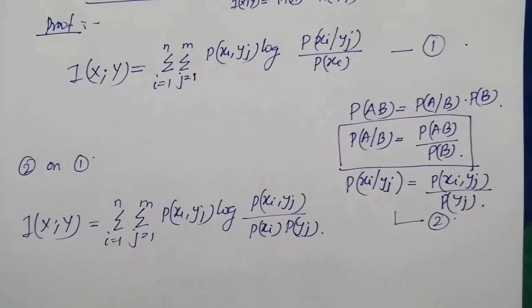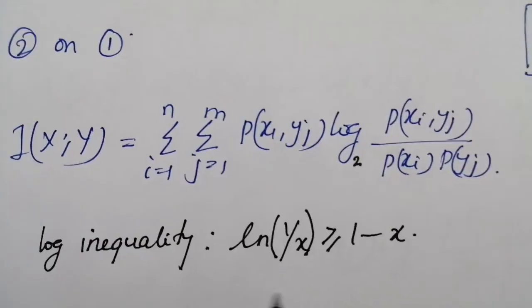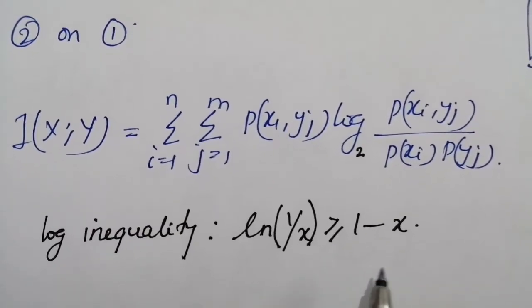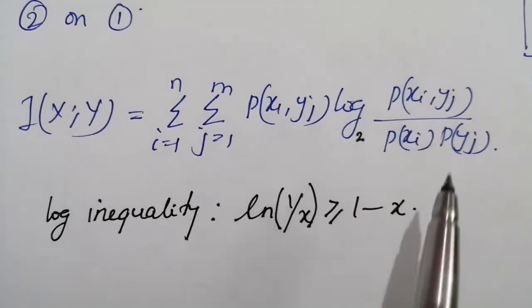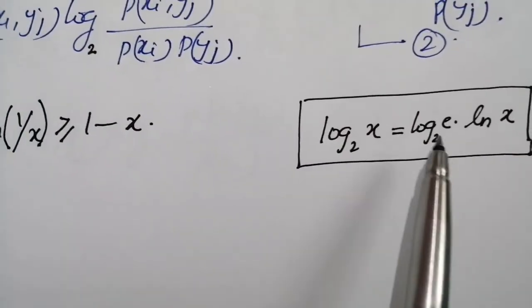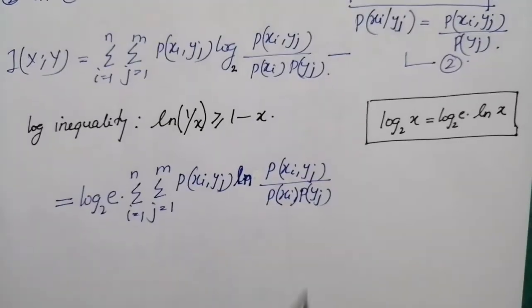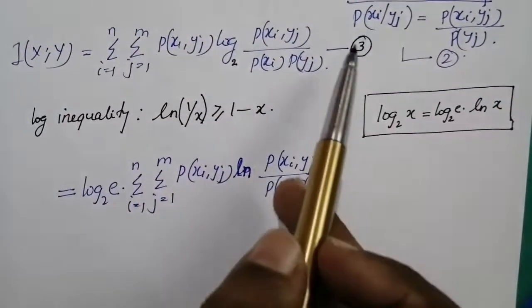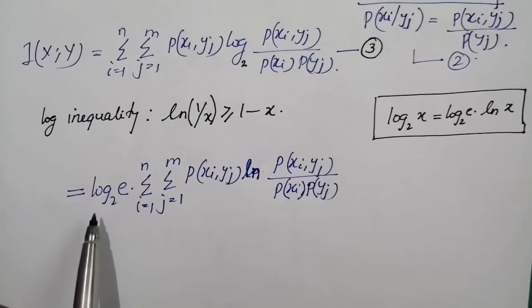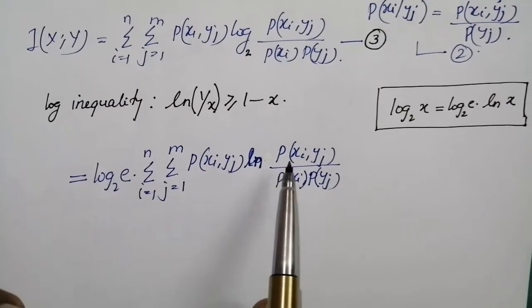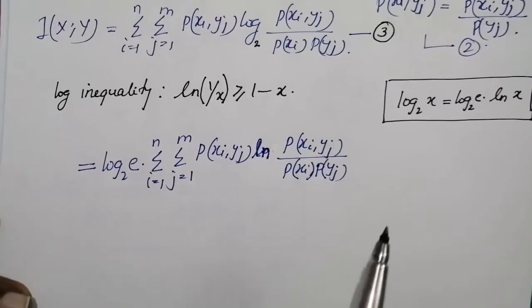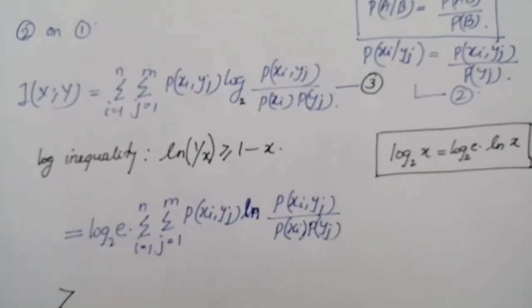Now we will apply the log inequality: ln(1/x) ≥ 1 - x. In order to apply the log inequality, we need to convert the logarithm base 2 to the ln function. For that, we know that log₂(x) = log₂(e)·ln(x). So equation number three can be written as log₂(e) times the double summation over i and j of p(xi,yj) ln(p(xi,yj) / (p(xi)·p(yj))).